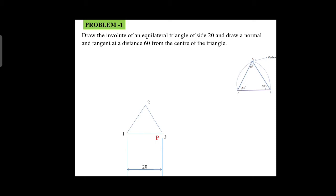Then you will draw an extension line from point 1, and next point 2, and next point 3 draw an extension line. Now with 1 as center and 1P as radius, you draw an arc from that point up to the extension line of 1. You will get P1.